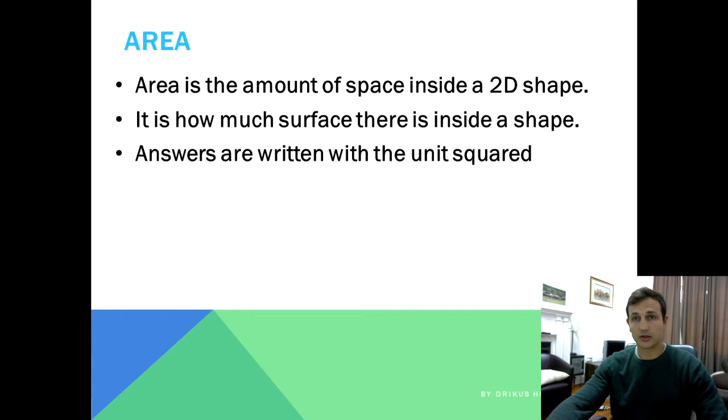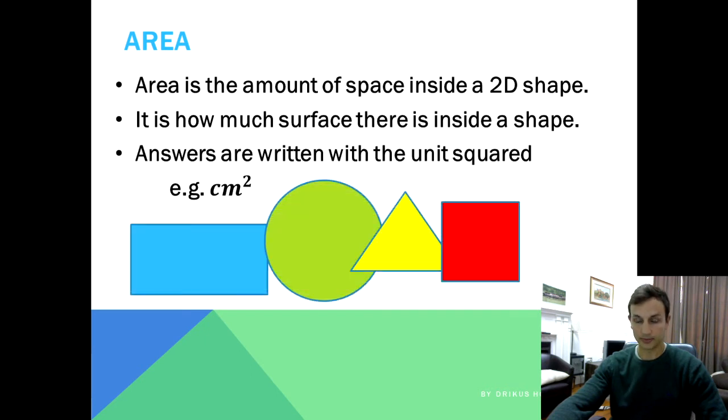So the answers that you get once you work out area must be with the unit squared. For example, if the shape is given in the unit of centimeters then your answer will be in centimeters squared once you've calculated the area, or the same goes for meters and meters squared and so on. Alright, so we'll be looking at these basic shapes and how to work out the area.